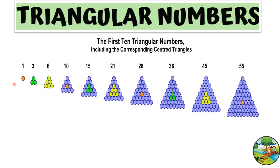You can see here these are the first 10 triangular numbers: 1, 3, 6, 10, 15, 21, 28, and so on. There is a pattern which has been followed here to form the triangular numbers.